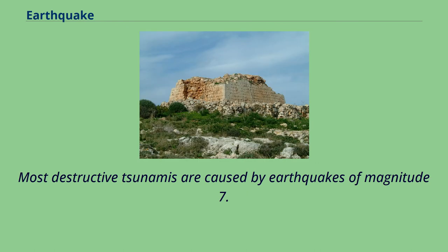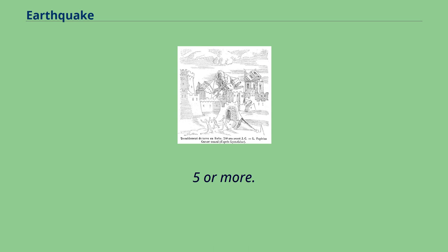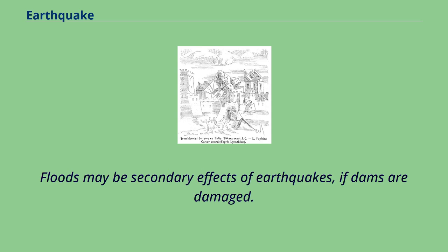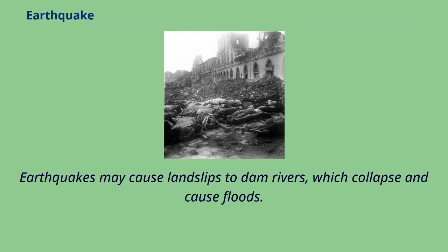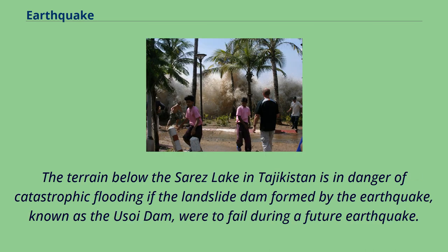Most destructive tsunamis are caused by earthquakes of magnitude 7.5 or more. Floods may be secondary effects of earthquakes if dams are damaged. Earthquakes may cause landslips to dam rivers, which then collapse and cause floods. The terrain below Sarez Lake in Tajikistan is in danger of catastrophic flooding if the landslide dam formed by the earthquake, known as the Usoi Dam, were to fail during a future earthquake.